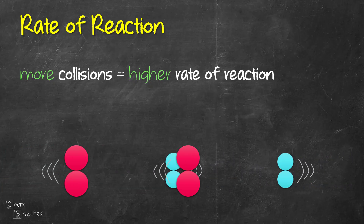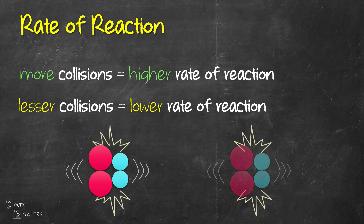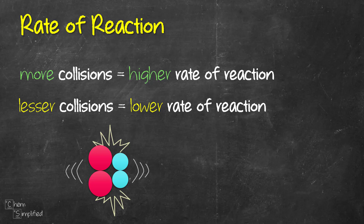As more and more reactants collide with each other, more products will be formed, and that translates to an increased rate of reaction. The opposite is true when we have fewer collisions — that translates to a lower rate of reaction.